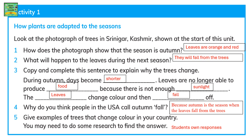What will happen to the leaves during the next season? They will fall from the trees. Copy and complete these sentences to explain why the trees change. During autumn, days become shorter. Leaves are no longer able to produce food because there is not enough sunlight. The leaves start to change color and then fall off.